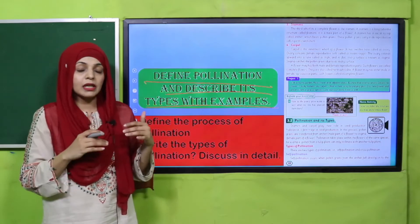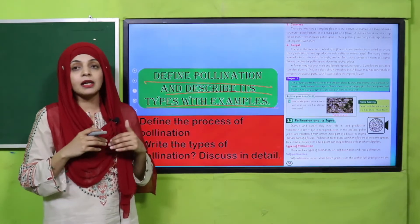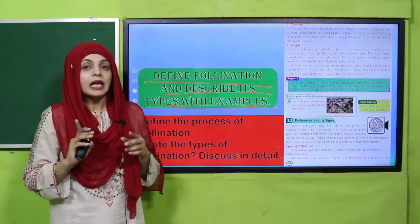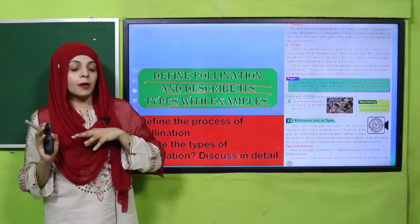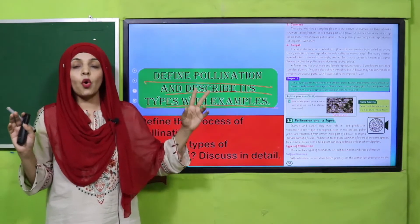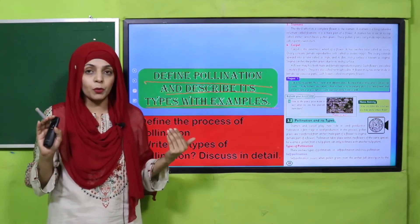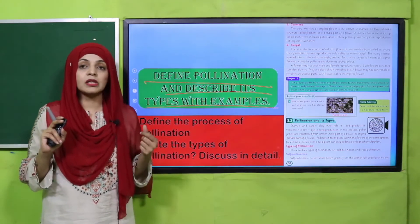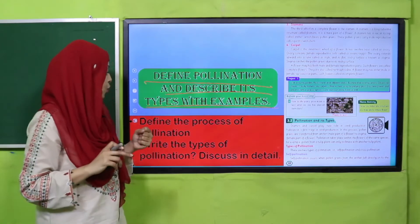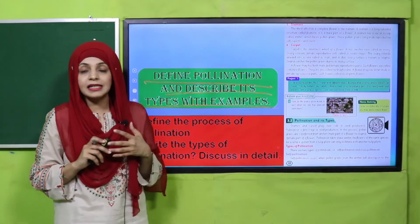Pollination do tarah se hoti hai: ya toh within a plant — same flower ya same plant ke flowers mein — so that is called self-pollination. Lekin agar same species ke hain but they are two separate plants, aur unke darmiyan pollination ho rahi hai, toh that is called cross-pollination. Yeh insects ke through, wind ke through, ya air ke through bhi ho sakti hai. Define the process of pollination and write the types of pollination in detail.